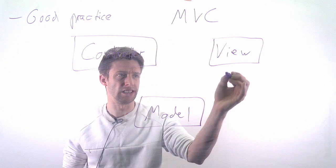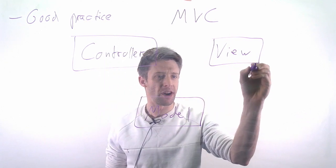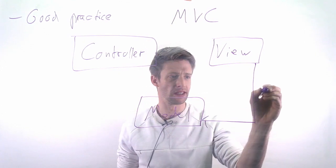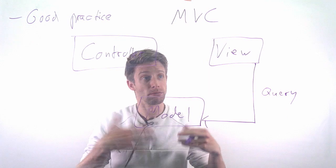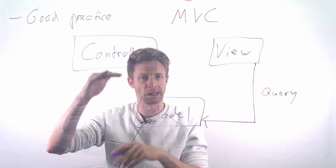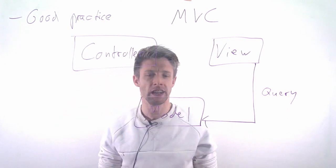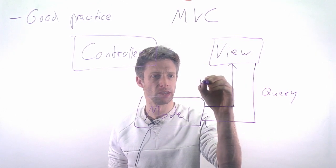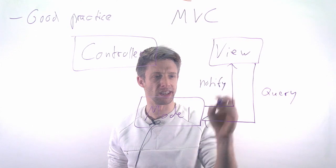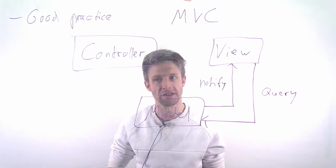Essentially, you have the data. The view queries it - it gets the data from a database, for example, and represents it in a certain way, like a table on a website. The model, if something changes in the data, might also notify the view saying, my data has changed, please reload the website, for example.